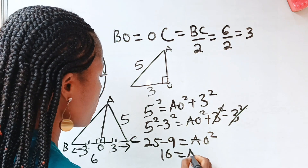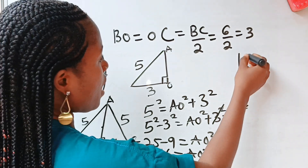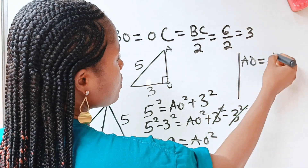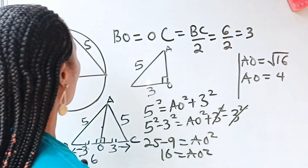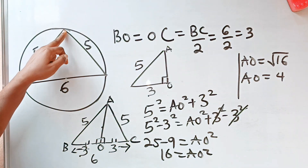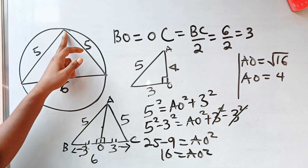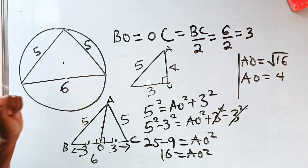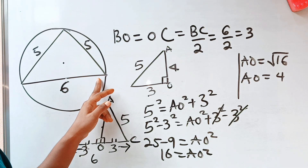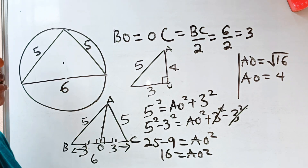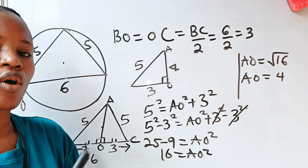Therefore AO equals the square root of 16, so AO equals 4. The length from A to O is 4, and from here to here is 6. Now let us introduce another theorem — the chord-chord power theorem.